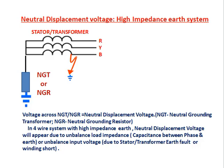Neutral displacement voltage in a high impedance earth system: to control earth fault current, high impedance is connected on the neutral side of the source. One side of the stator winding or transformer is shorted together and connected to earth via high impedance — an NGT (neutral grounding transformer) or NGR (neutral grounding resistor). The voltage across the NGT or NGR equals the neutral displacement voltage. In a 4-wire system with high impedance, neutral displacement appears due to unbalanced load impedance, capacitance between phase and earth, unbalanced input voltage, or stator/transformer earth fault or winding short.